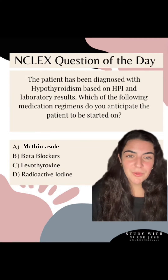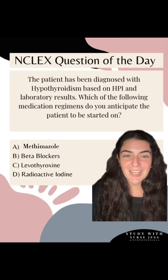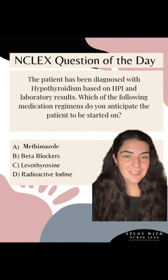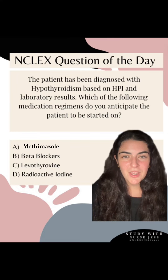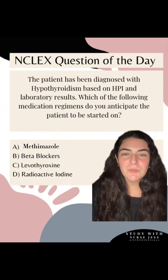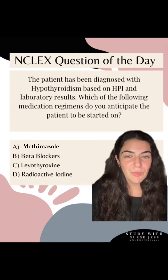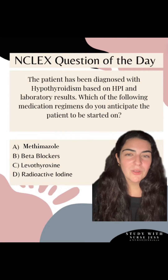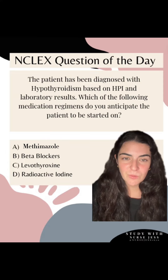Welcome to part 3 of my NCLEX clinical case study on hypo versus hyperthyroidism. If you haven't already seen parts 1 and 2, go check them out on my page. So the patient has been diagnosed with hypothyroidism based on the history of present illness and laboratory results. Which of the following medication regimens do you anticipate the patient to be started on?